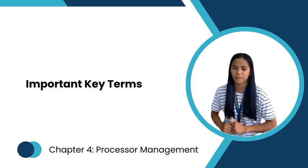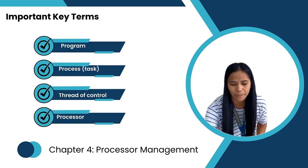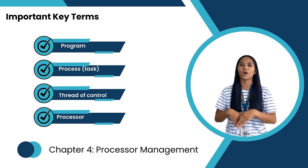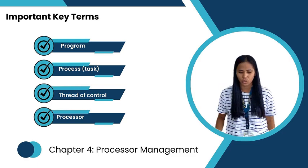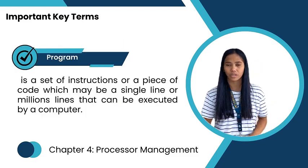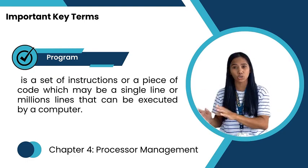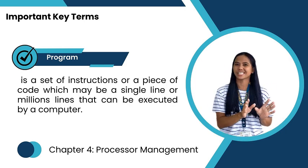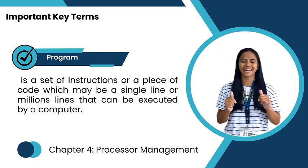Let's define some important terms. First is the program — a set of instructions that can be executed by the computer. It's a piece of code which can be a single line or millions of lines. That is what we call a program.